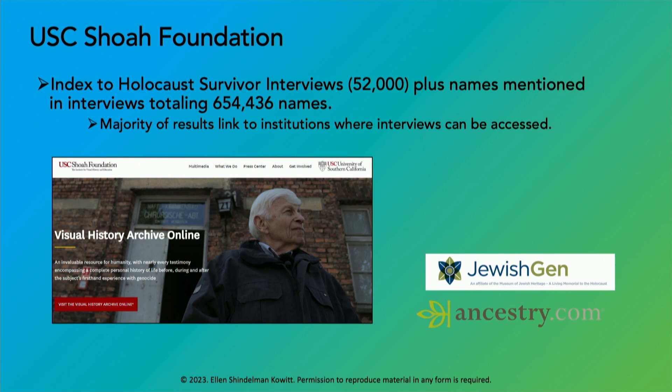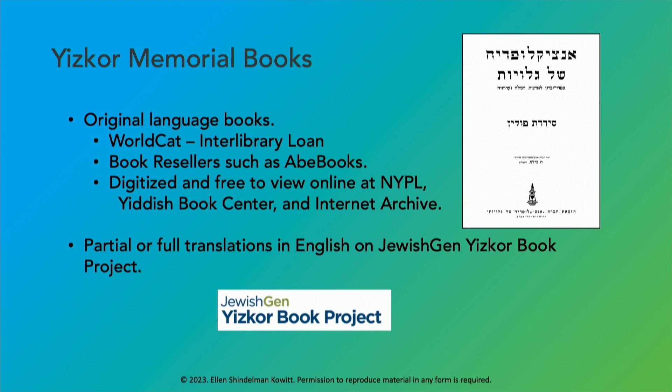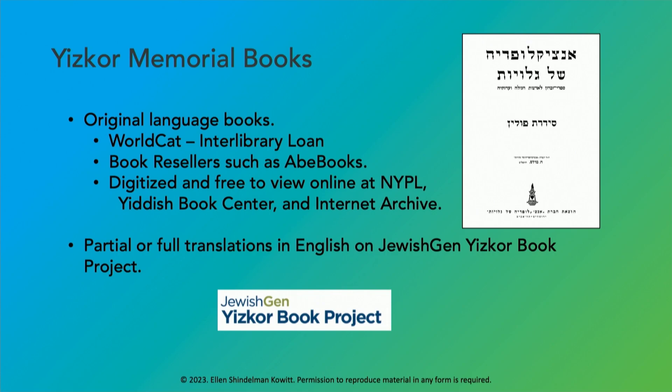The USC Shoah Foundation collected video testimonies of Holocaust survivors; these are name-indexed and available online, through Ancestry, and through JewishGen. Yizkor memorial books commemorate towns destroyed in the Holocaust and are digitized at the New York Public Library, WorldCat, Internet Archive, and the Yiddish Book Center in Amherst, Massachusetts. JewishGen volunteers have translated portions or whole books into English, and fully translated books are even sold to the public through JewishGen. There are also Shtetl Life books for broader context on Jewish community life — a favorite is Life is with People.